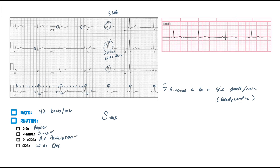But again, look at the rate — it's bradycardic. So we have sinus bradycardia — with a wide QRS. But what's that wide QRS due to? A right bundle branch block.